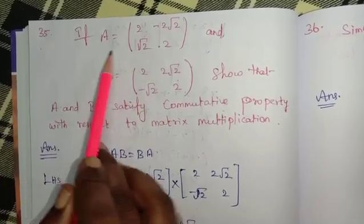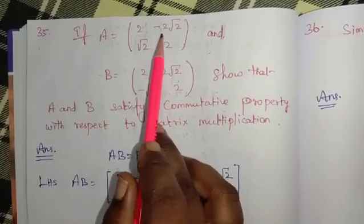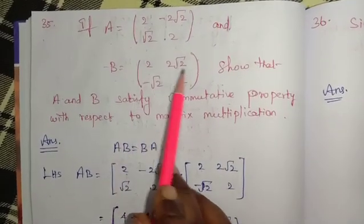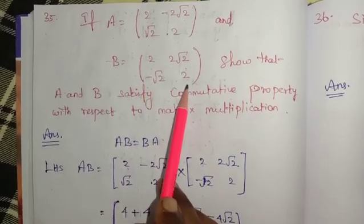If A is equal to, in the matrix bracket level, 2, minus 2 root 2, root 2, 2, and B is equal to 2, 2 root 2, minus root 2, 2.